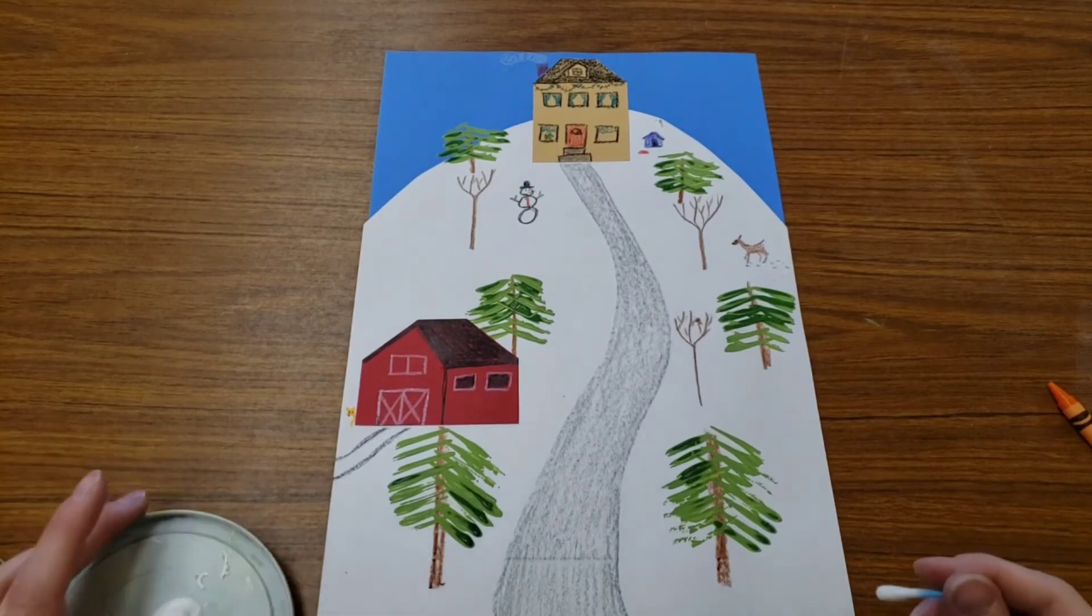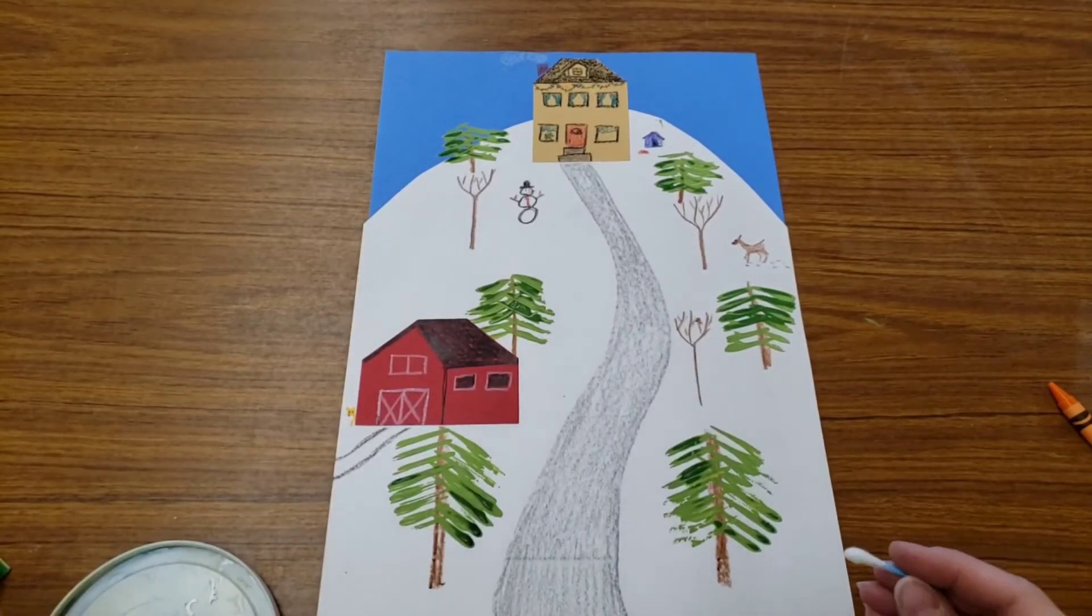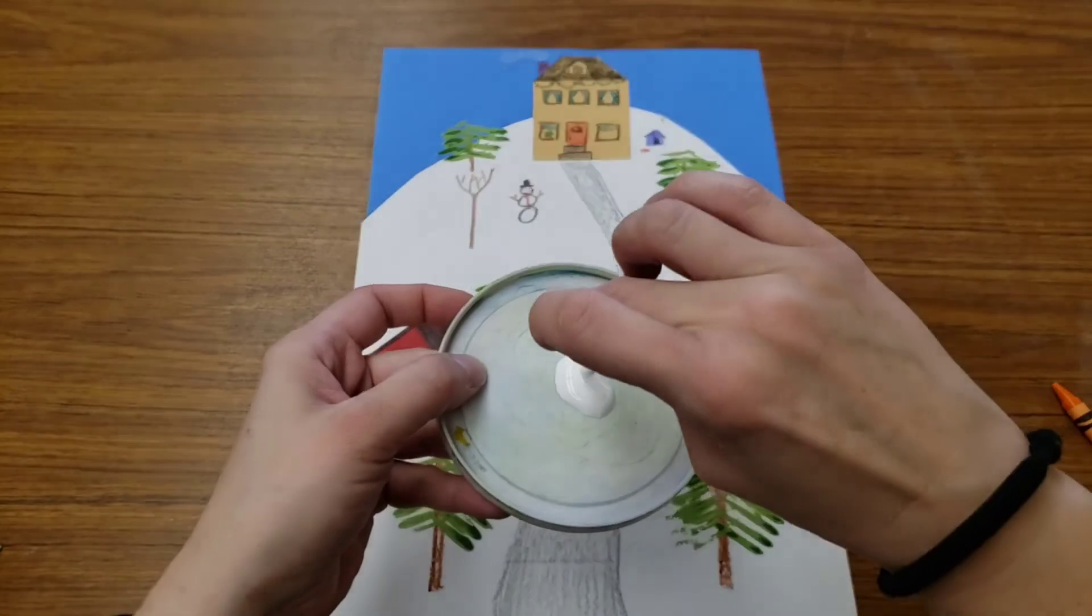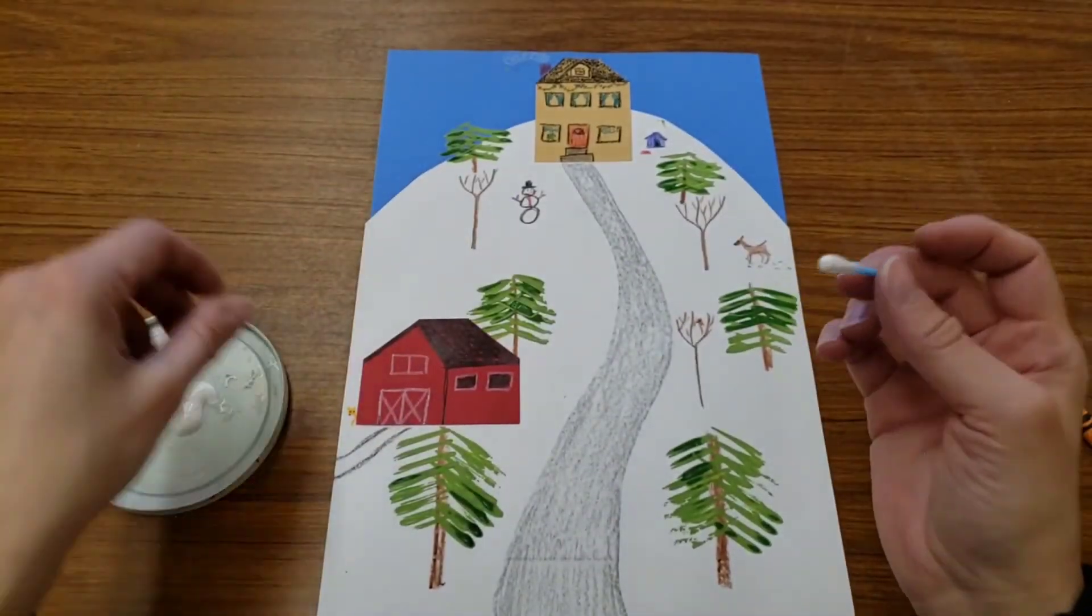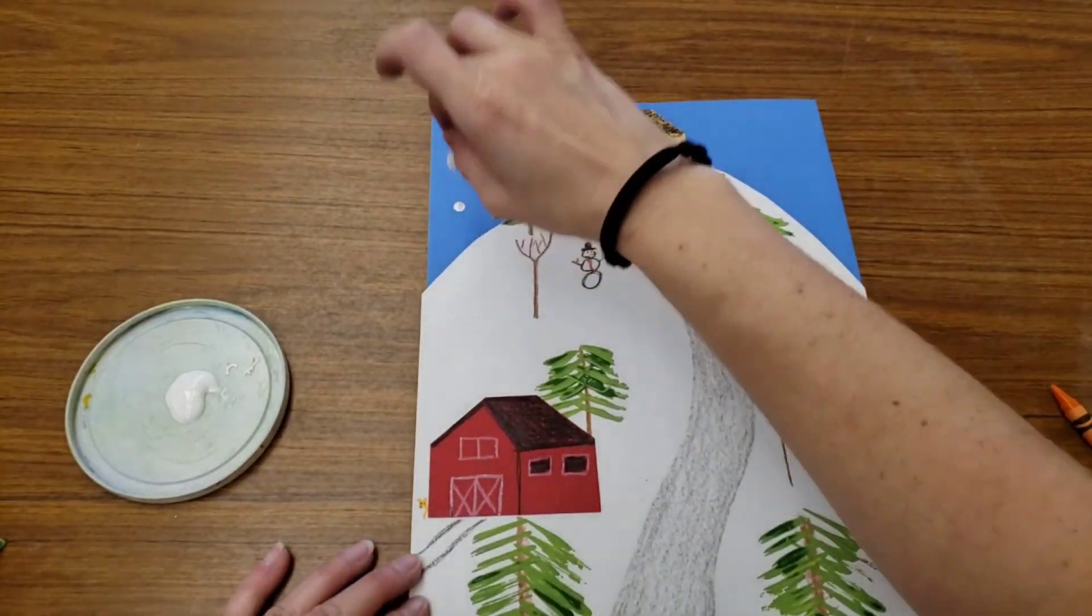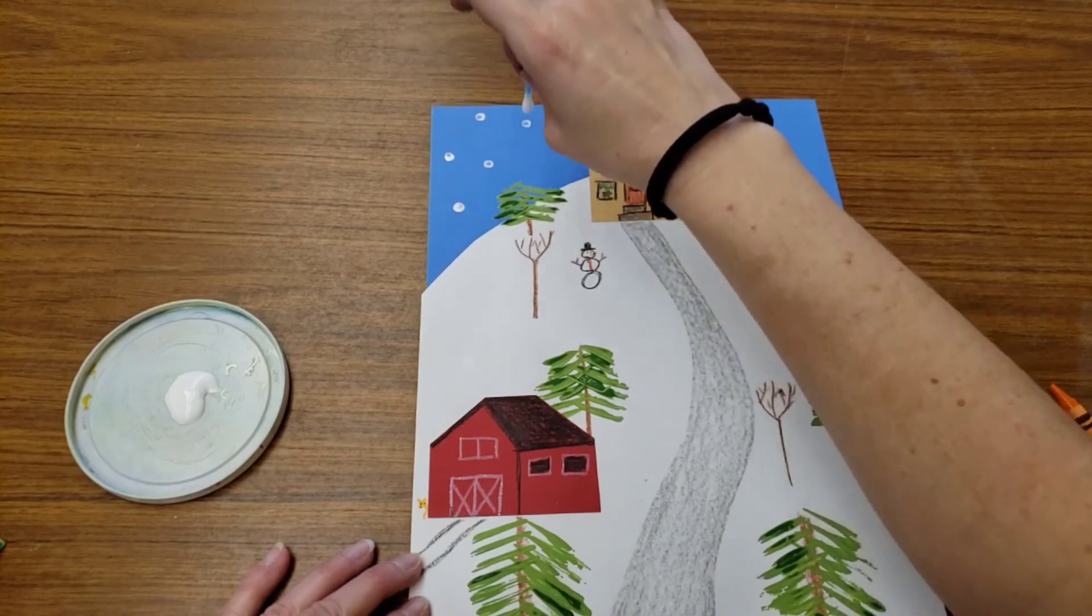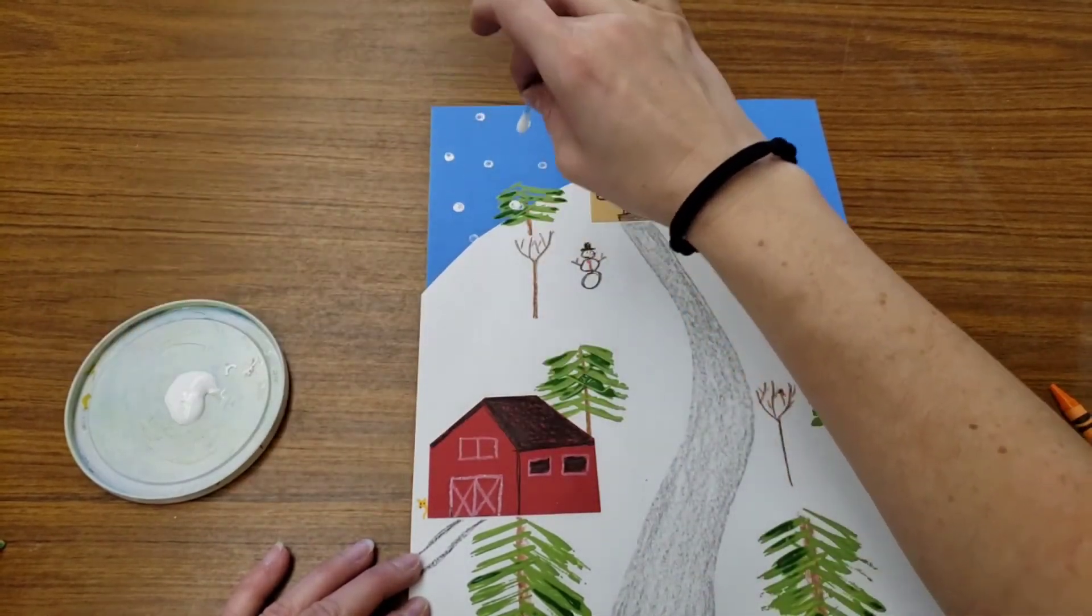For the very last step, once all your details are added, you will have white paint and a Q-tip, and we will use that to add some gently falling snow.